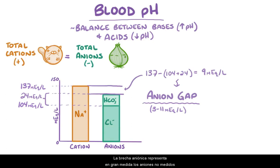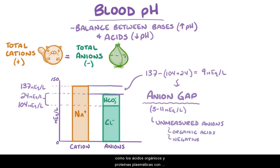The anion gap largely represents unmeasured anions, like organic acids and negatively charged plasma proteins, like albumin.